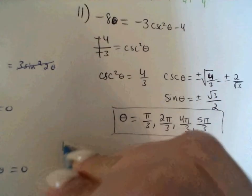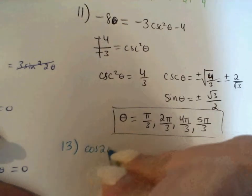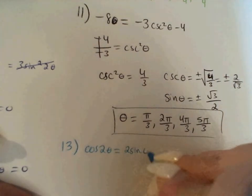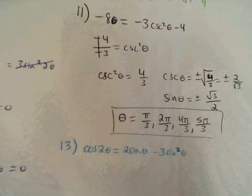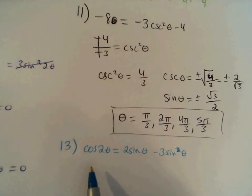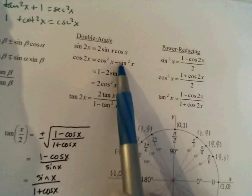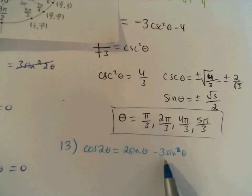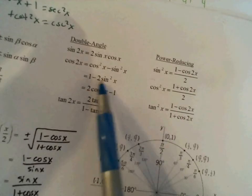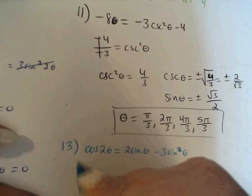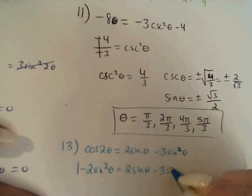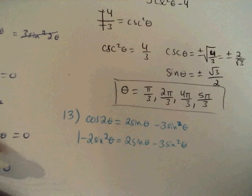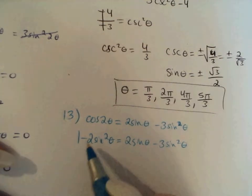Let's look at number 13. Number 13 says cosine 2 theta equals 2 sine theta minus 3 sine squared theta. Cosine 2 theta has three different forms. Keeping in mind that the other side only has sines, it would be to my advantage to replace cosine 2 theta using the middle form: 1 minus 2 sine squared. So I'll substitute: 1 minus 2 sine squared theta equals 2 sine theta minus 3 sine squared theta.